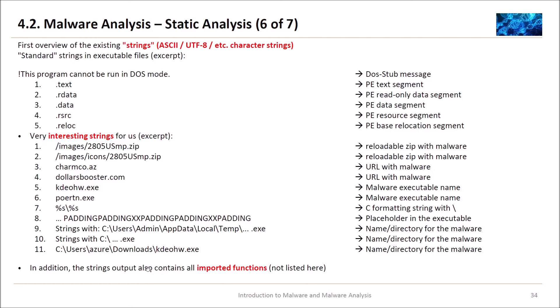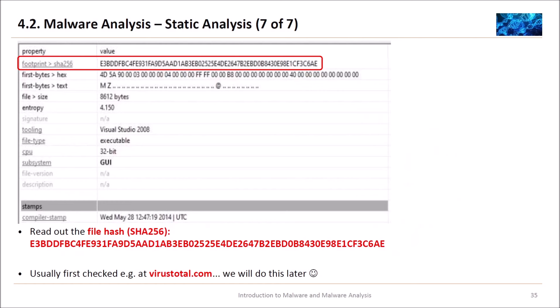In addition, the strings output also contains all important functions — this is only an excerpt from all strings you can find using the strings command. Here is also the footprint of the malware — a SHA-256 cryptographic hash value, a fingerprint read out using PEStudio. Usually we would first check this at virustotal.com, which has a huge database with all these fingerprints. But we will do this later in the video.